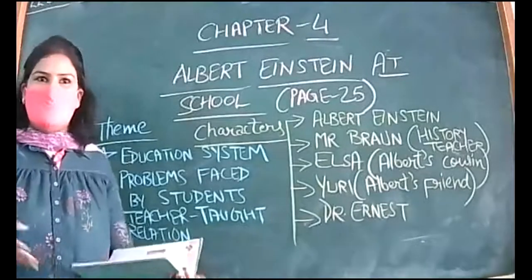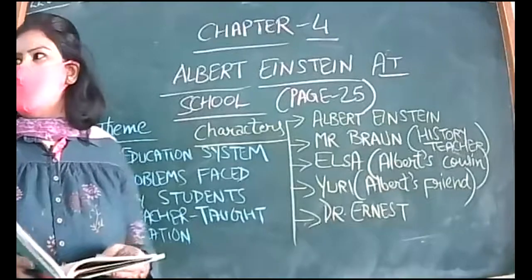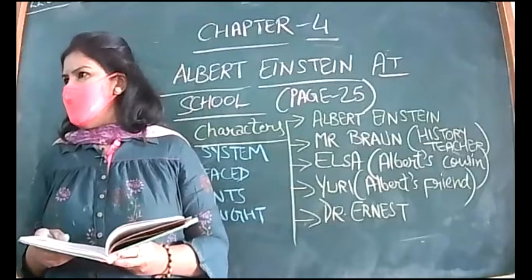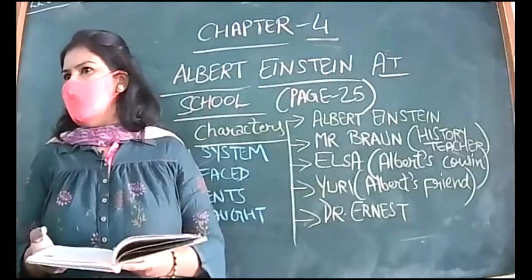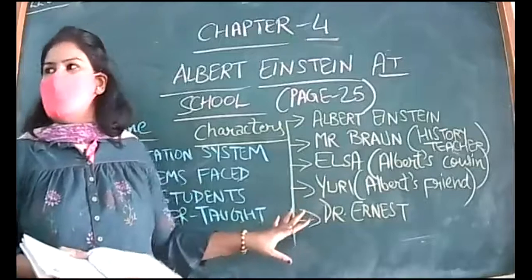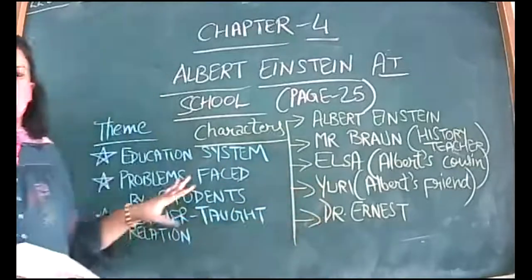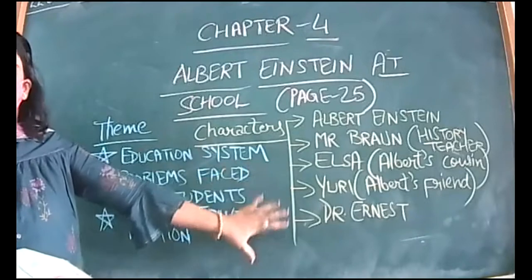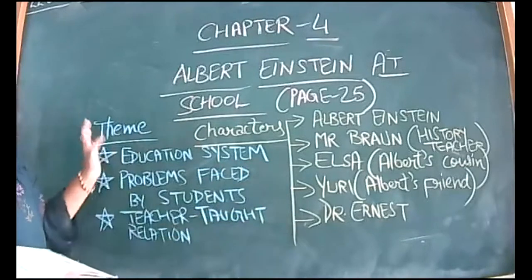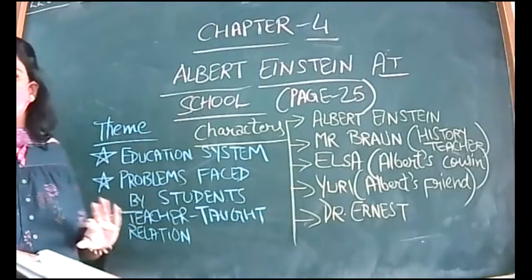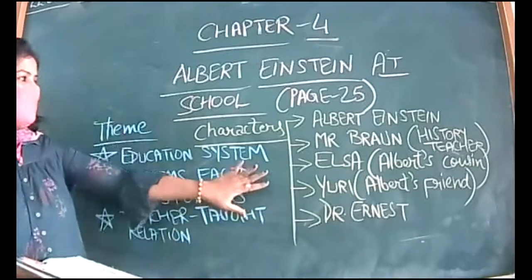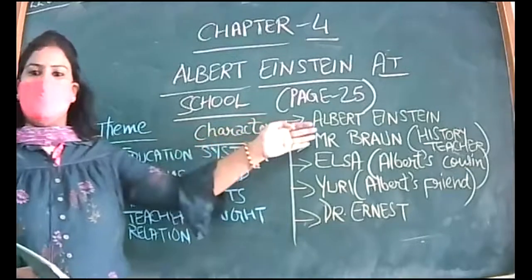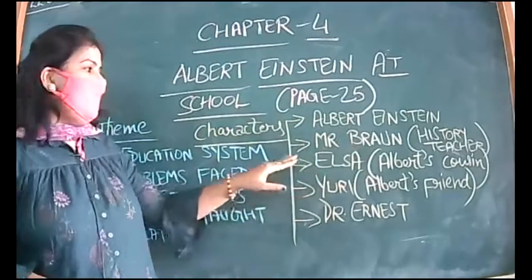Good morning to both classes — Plus One B and Plus One C. We are going to start a new chapter: 'Albert Einstein at School.' I'll first introduce the characters, then discuss the themes, and then we'll start reading. Please note down: the protagonist is obviously Albert Einstein himself, the main character.